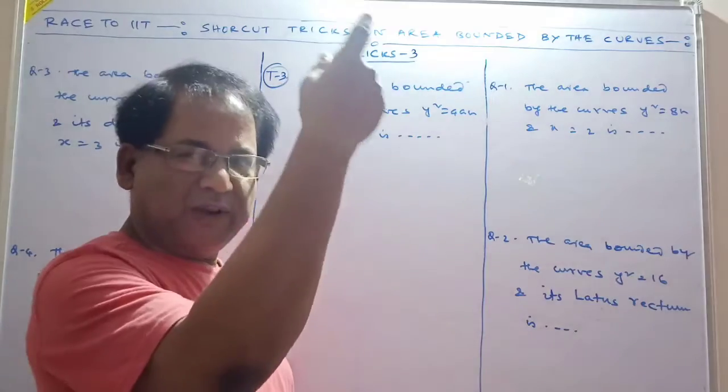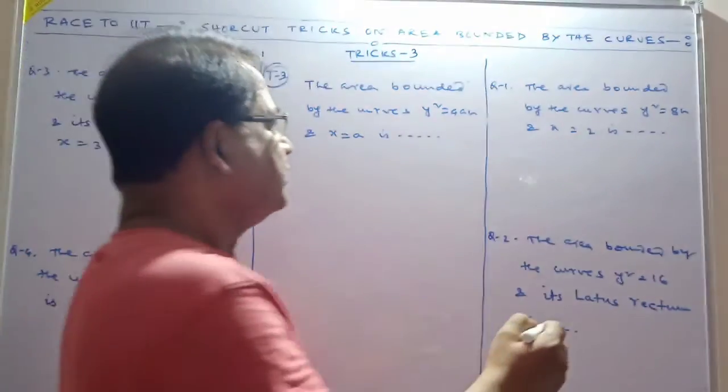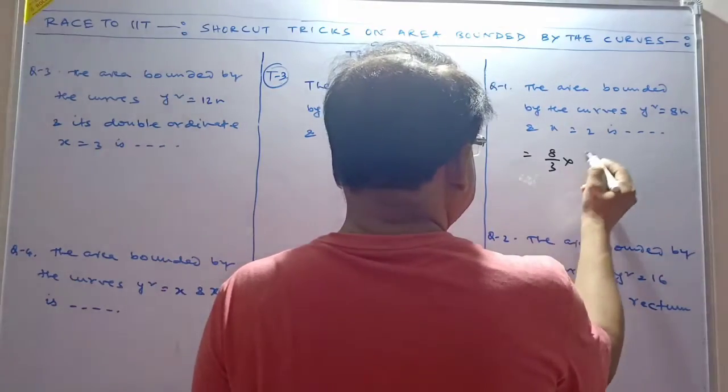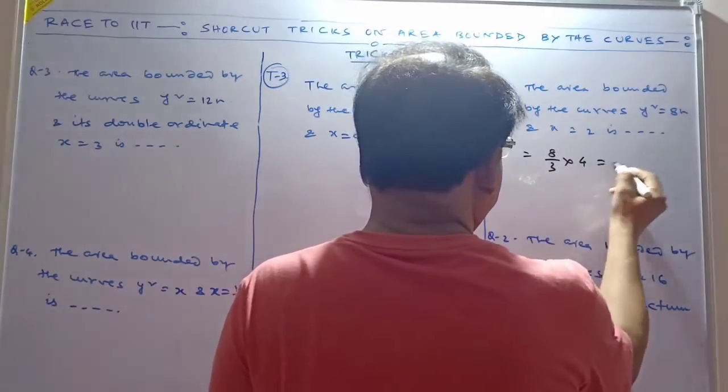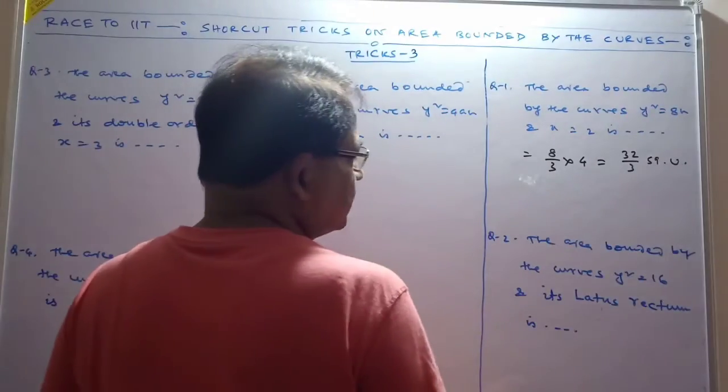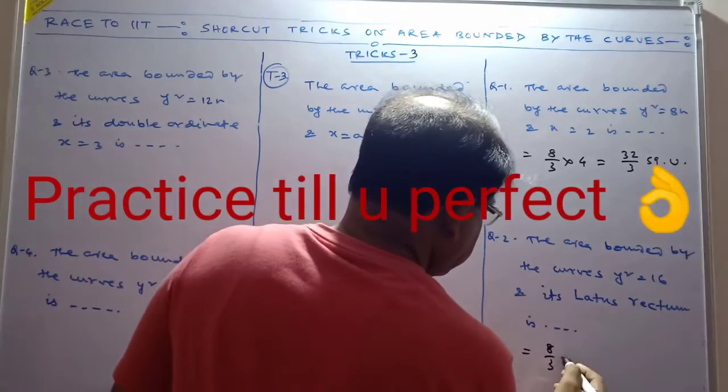Just have different questions. So this is 8/3 times 4, that is 32/3 square units. This is 8/3 times 16, so this is 120/3 square units.